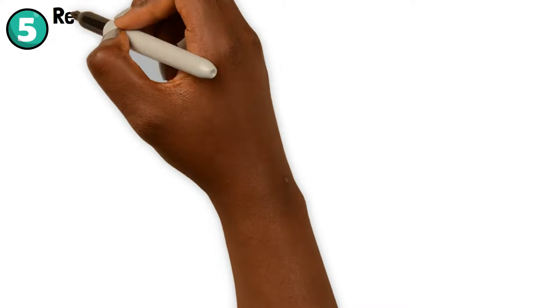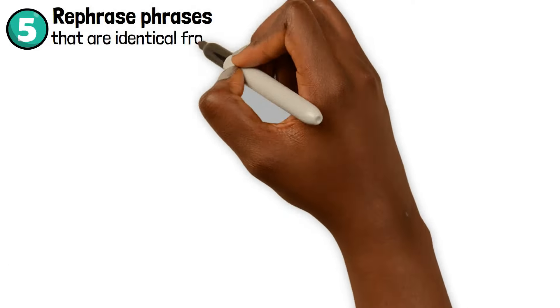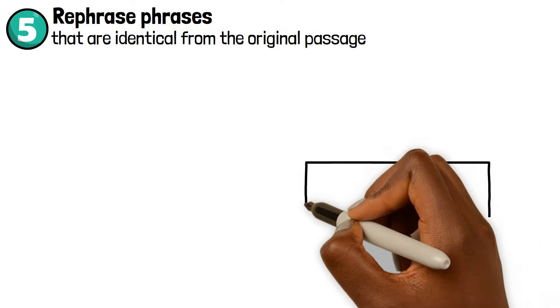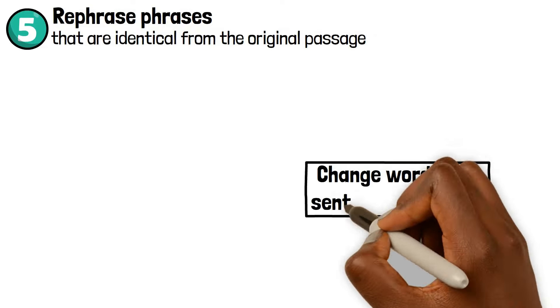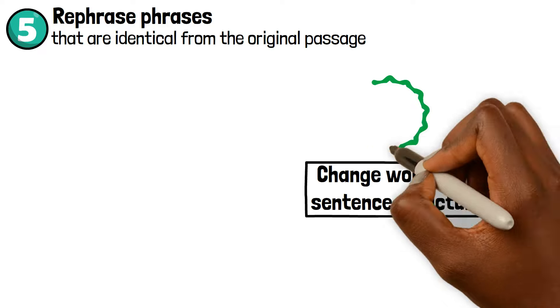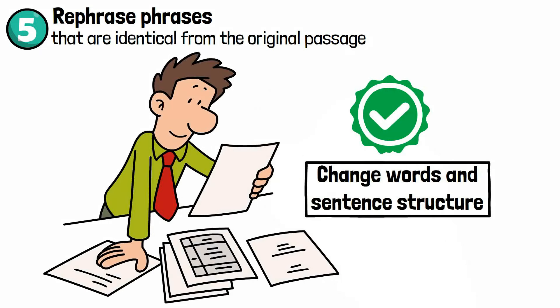Step number five: rephrase phrases that are identical from the original passage. You can change words and sentence structure to ensure you keep the original meaning from the source intact.